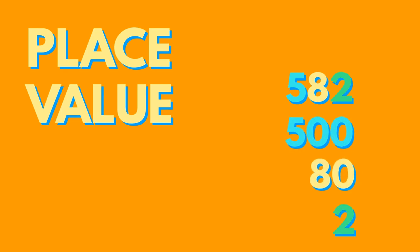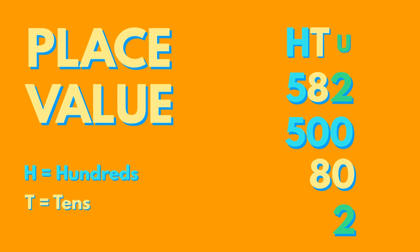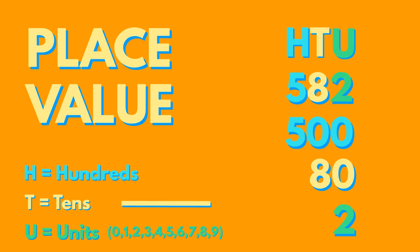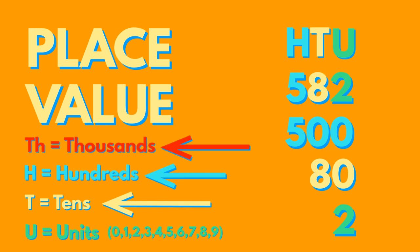The numbers 1 to 9 are classed as units or ones. For larger numbers, we need to go into the next column — the tens, then into the hundreds, then thousands and so on. Every time we want to show a bigger number, we add a column to the left, and it is always ten times larger than the column on the right.